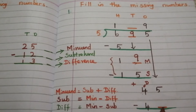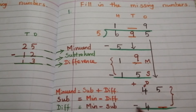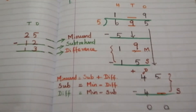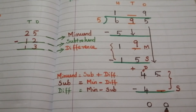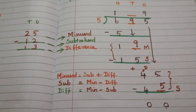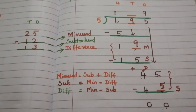To find the next dash in this subtraction problem — 45 minus this dash — this dash is the subtrahend. The subtrahend is the difference between the minuend and the difference. The minuend is 5 and the difference is 0, so 5 minus 0 gives the subtrahend: 5 minus 0 is 5. So this dash is 5. Verify: 5 minus 5 is 0, so our answer of 5 is correct.